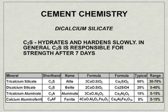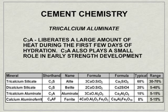Next is dicalcium silicate, or C2S. C2S hydrates and hardens slowly. In general, it is responsible for the later strength — the strength gained in concrete after 7 days. The amount of C2S in a cement could range from 5 to 40%. Next is tricalcium aluminate, C3A. C3A liberates a large amount of heat during the first few days of hydration and also plays a smaller role in early strength development. The proportions of C3A will range from 5 to 15% in cement, and it is very important to note that the lower the amount of C3A, the more resistant your concrete will be to sulfates in soils and water.